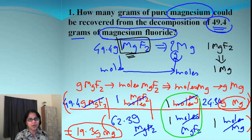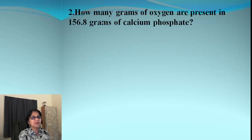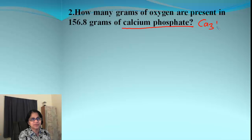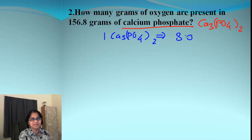Let's do one more problem. In this problem we are going to find out how many grams of oxygen are present in 156.8 grams of calcium phosphate. There is the formula for calcium phosphate — Ca₃(PO₄)₂. One mole of calcium phosphate contains how many moles of oxygen? It's 4 times 2, so it will be 8 oxygen atoms. Keep that in mind when we write the ratio.